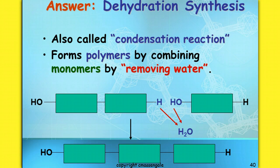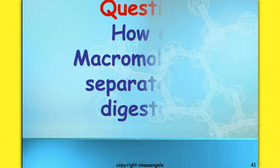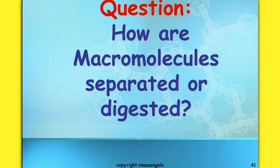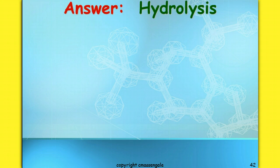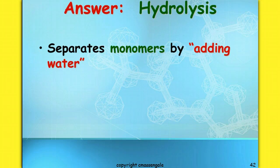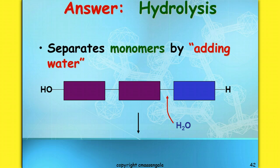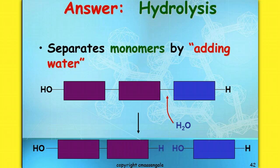Then you have to think about how macromolecules are separated or digested. The answer is a chemical reaction called hydrolysis. If in dehydration synthesis we formed water, then to break it down we'd have to put water back in. Hydrolysis separates the monomers by adding water. It's the exact opposite: we add water in place of that chemical bond, breaking it and putting the hydrogen and the hydroxide back onto those monomers.